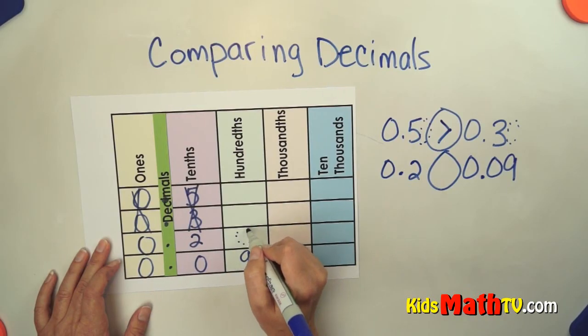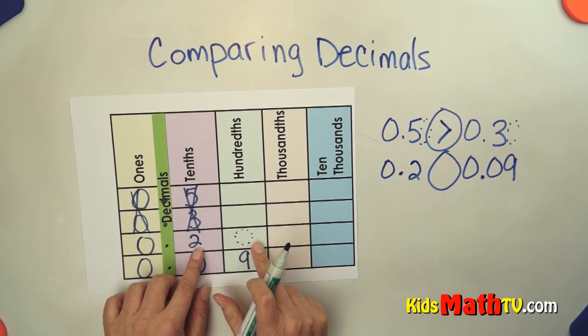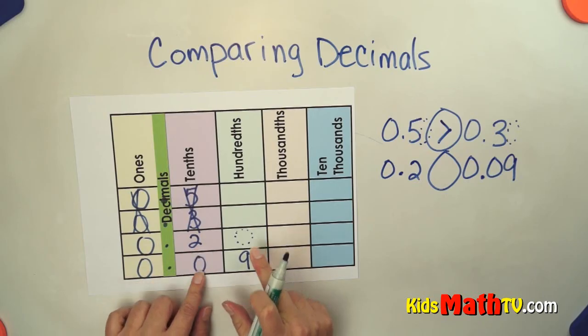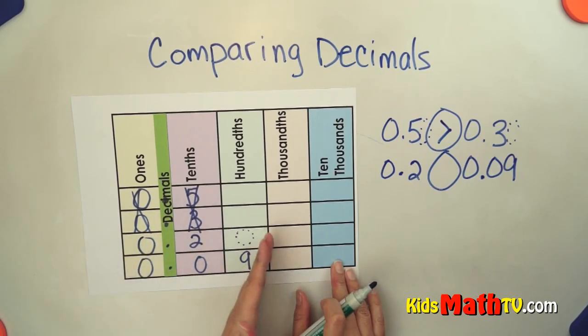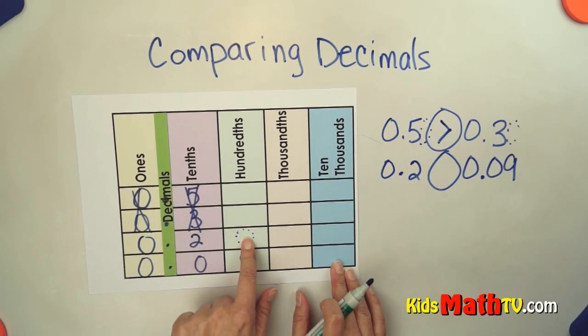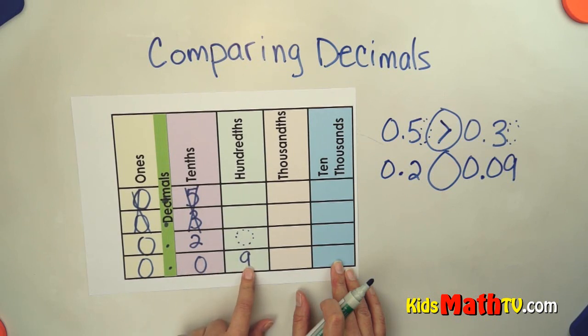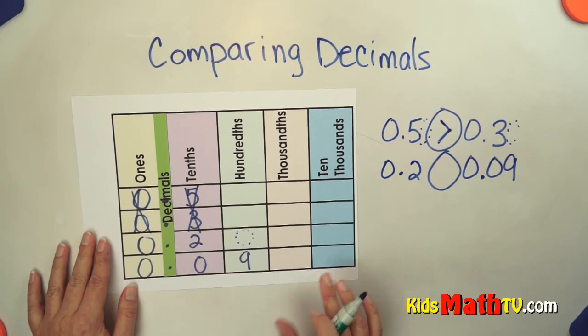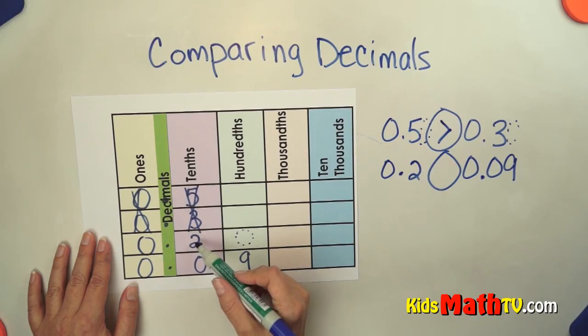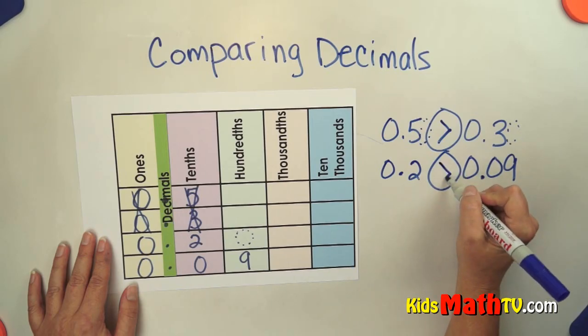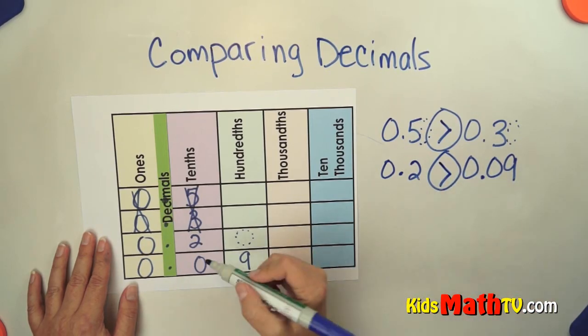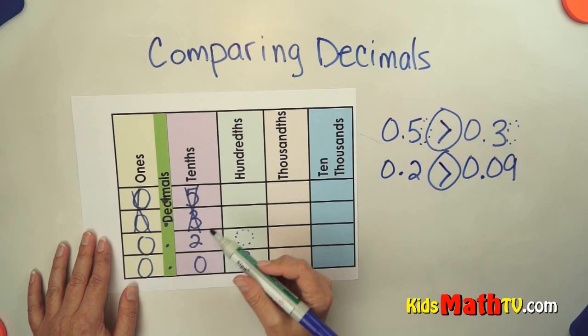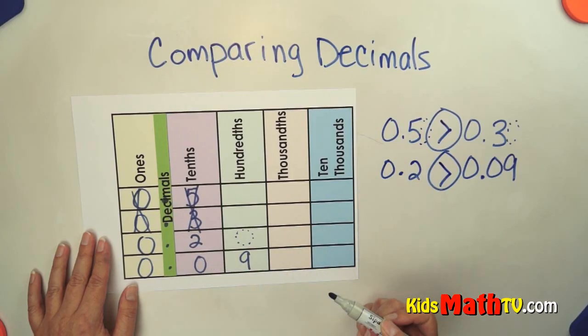This is more like 20. This is 20 hundredths, or like 20 cents. This, however, is only 9 cents. It's 9 in the hundredths place. So if we look, 20 is actually larger than 9. 20 hundredths is larger than 9 hundredths because it has 2 tenths and 9 hundredths has 0 tenths. So 0.2 is actually greater than 0.09.